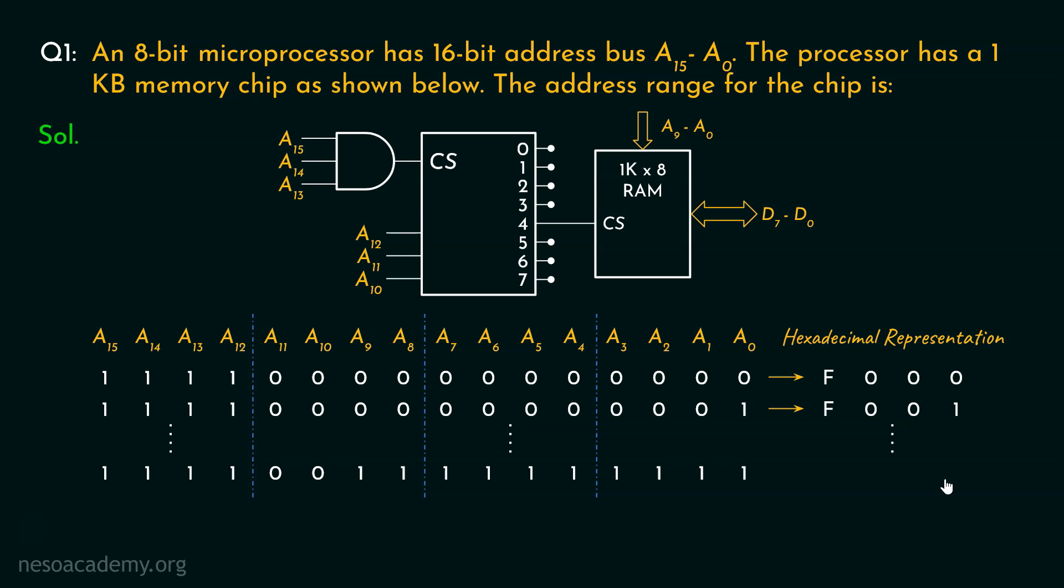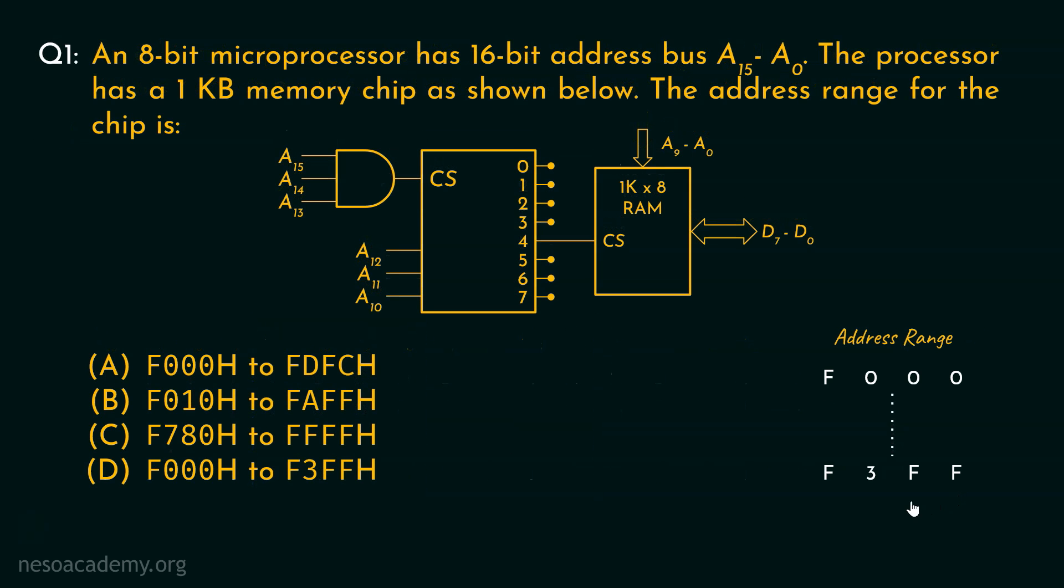Let's try to find out the last address. All 1s for the first bit, so F. Then, 0, 0, 1, 1, which is 3, followed by all 1s, that is F, and all 1s, once more, so one more F. So, the address range is F, 0, 0, 0, till F, 3, F, F.